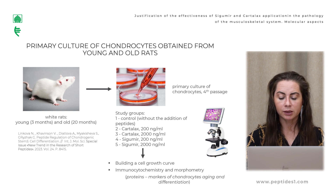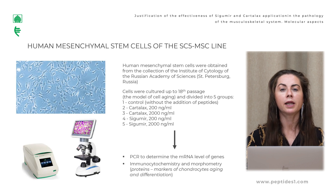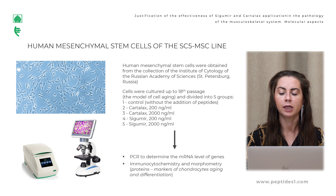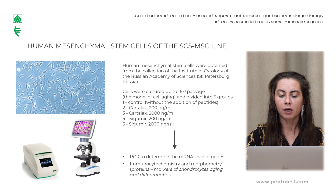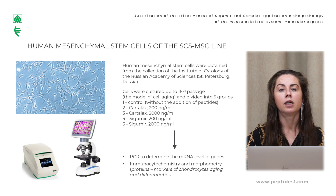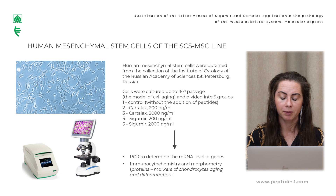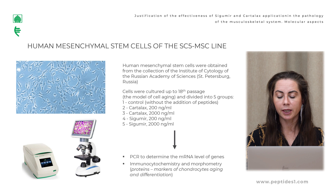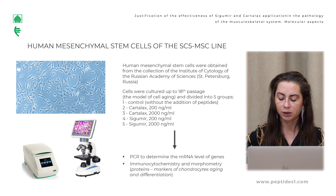After that, we built a cell growth curve and performed immunocytochemistry. The next object of our investigation was human mesenchymal stem cells of the SCO5 MSK line, obtained from the collection of the Institute of Cytology of the Russian Academy of Sciences. The group design for this investigation was the same as the previous experiment. We performed PCR analysis to determine gene expression and immunocytochemistry.